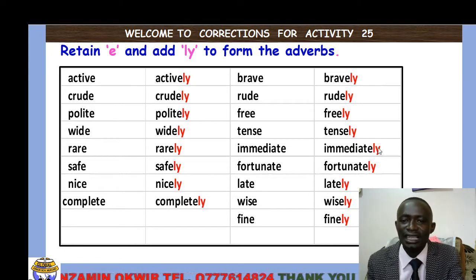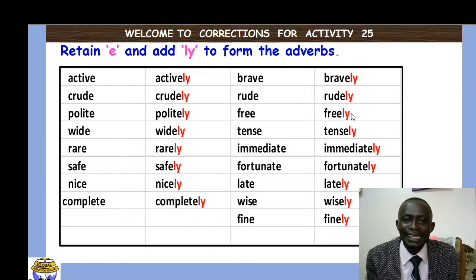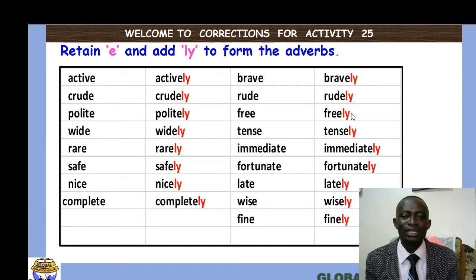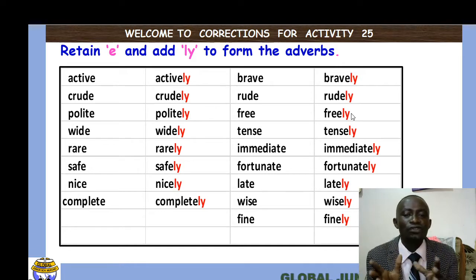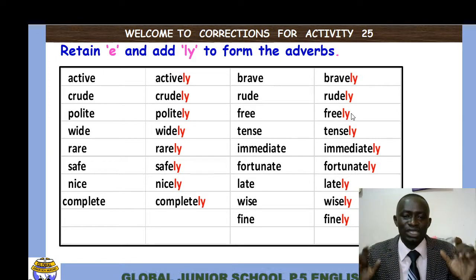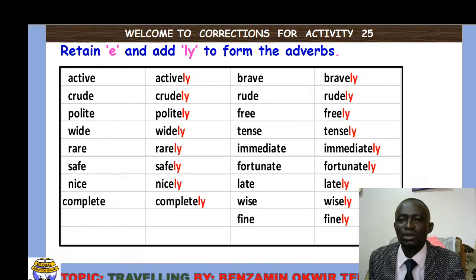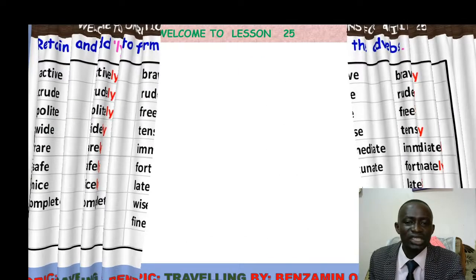This is a correction for the work I gave you. We have the word 'free', which forms its adverb as 'freely'. For example: I freely entered the school; no one checked me. We realize we were describing the action of entering — how was it? It was free; no one checked you. So 'freely' is our adverb. Hope that point is clear.